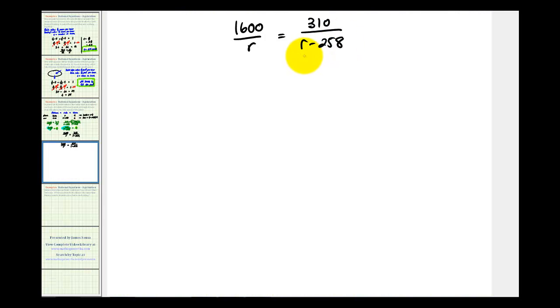This is a proportion, so a quick way to clear the fractions would be to cross multiply. 1,600 times the quantity r minus 258 must equal r times 310. So we'll have 1,600 times the quantity r minus 258 equals r times 310, or just 310r.